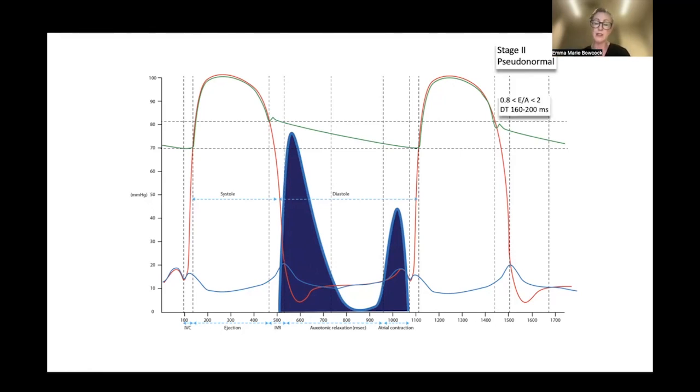What happens is the ratio then normalizes, but things we can look at to differentiate between normal and pseudonormal would be a few things. One thing you can look at, because your ratio is going to be the same between 0.8 and less than 2 for your E/A, is the decel time. We tend to have shorter decel times in grade 2 diastolic dysfunction.